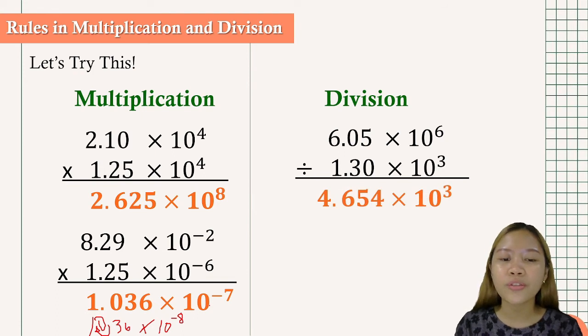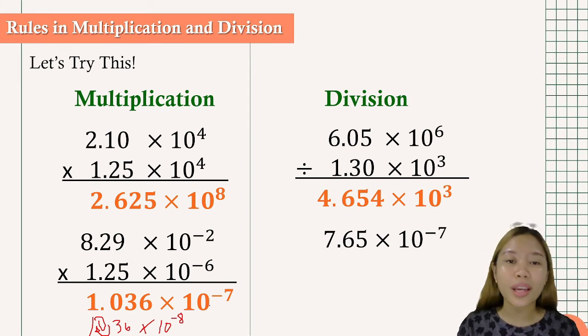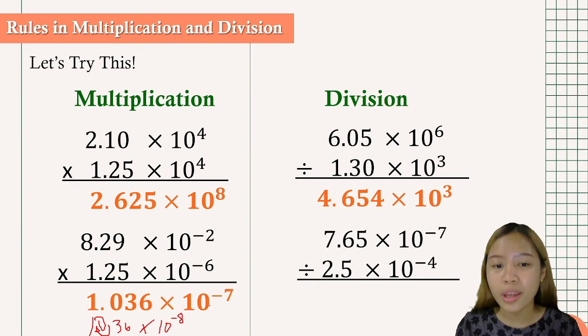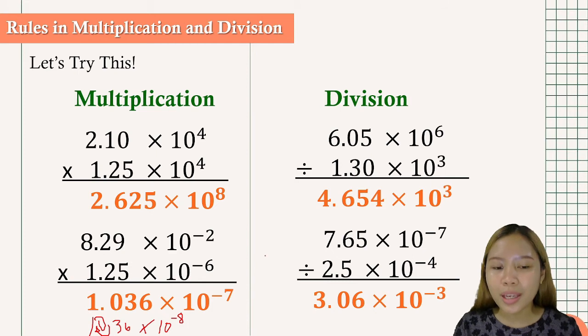So it is 4.65 times 10 to the 3rd. Just simply divide the coefficients and then subtract the exponents for the power of 10s. Okay, and here we have 7.65 times 10 to the negative 7 divided by 2.5 times 10 to the negative 4. And that will be equal to 3.06 times 10 to the negative 3.